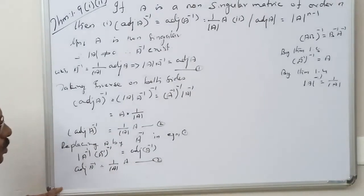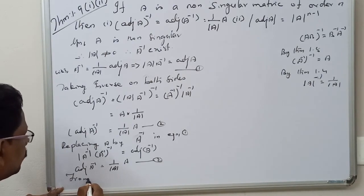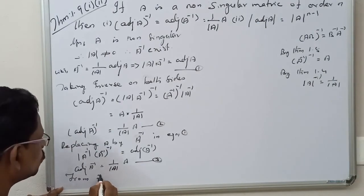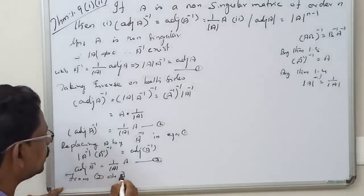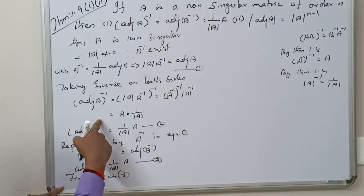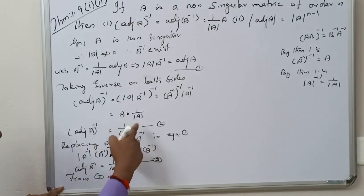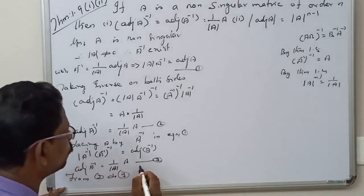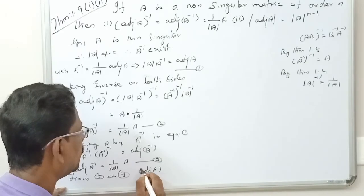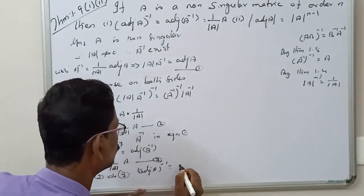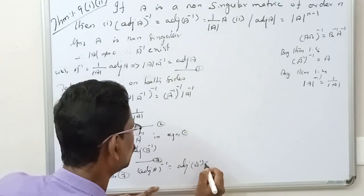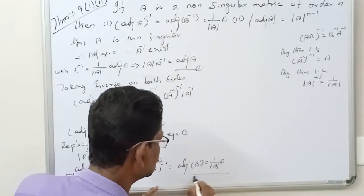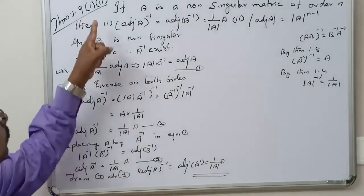From equations 2 and 3: adjoint A the whole inverse equals 1 by determinant of A into A. All terms are equal. Therefore, adjoint of A the whole inverse equals adjoint of A inverse equals 1 by determinant of A into A. This is Theorem 1.9 first part, over.